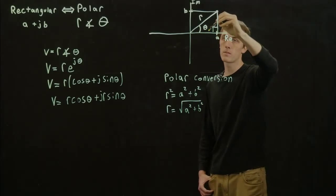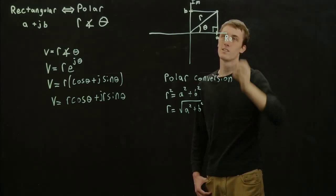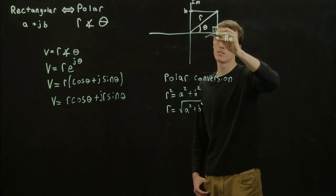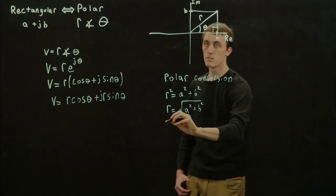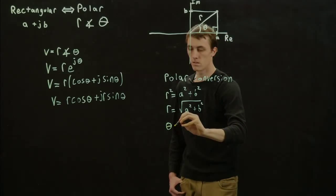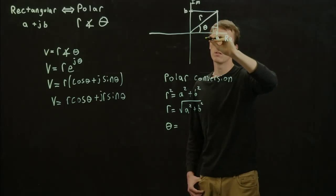And theta, if we remember SOH CAH TOA, is opposite over adjacent for tan. So it would be the tan inverse of opposite B over A.